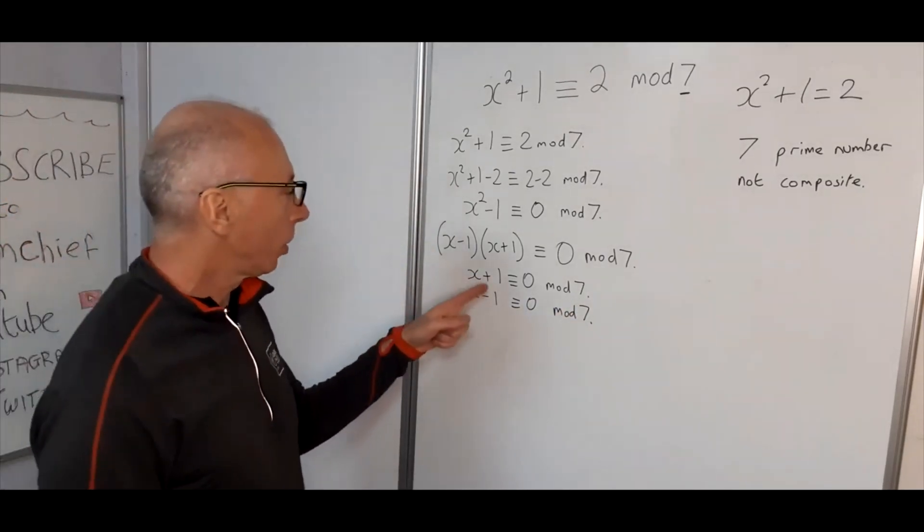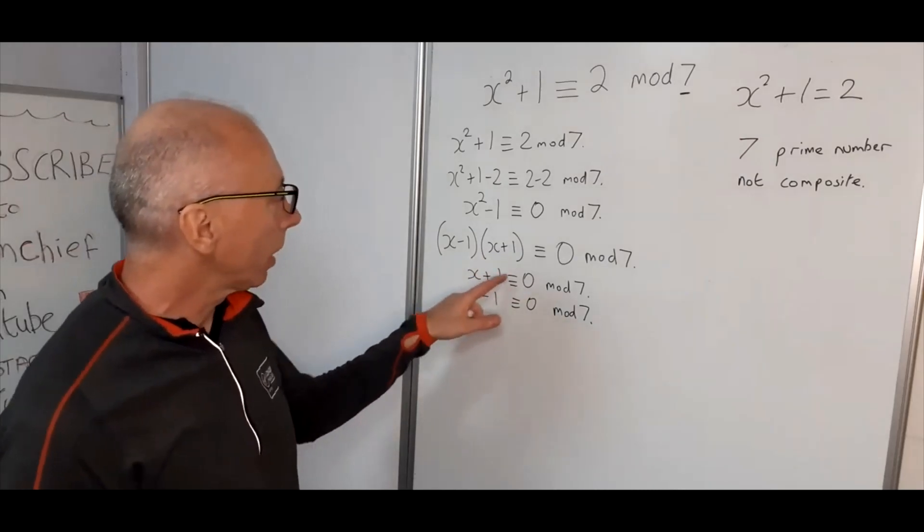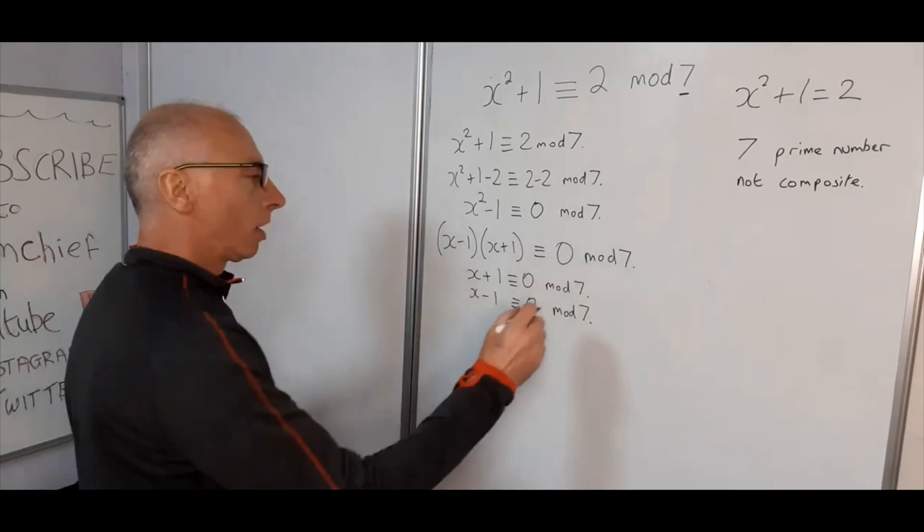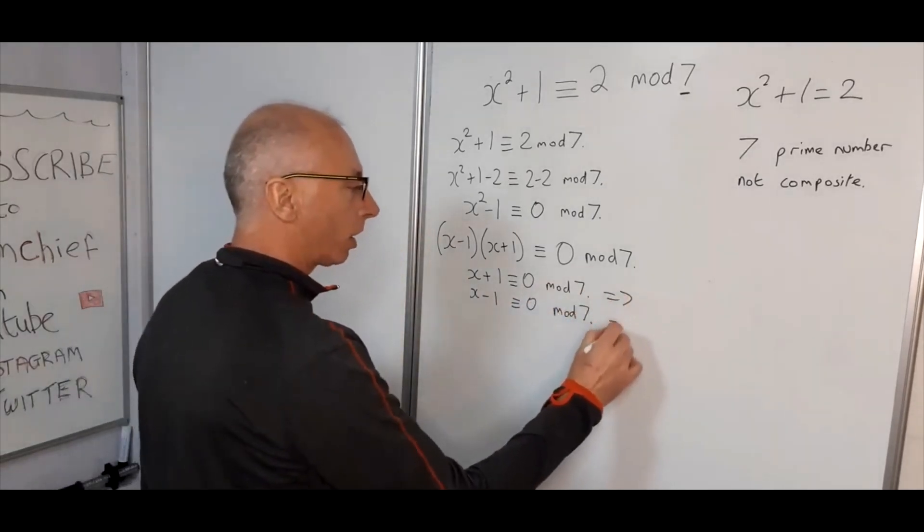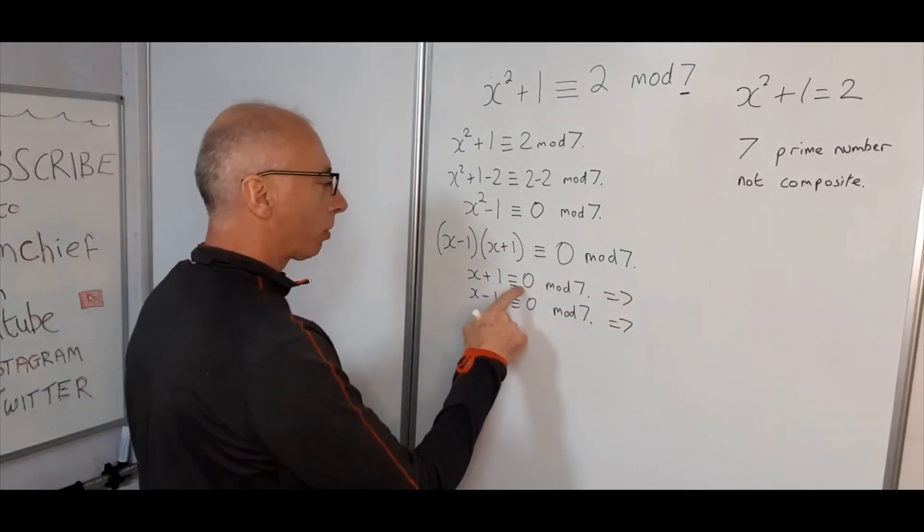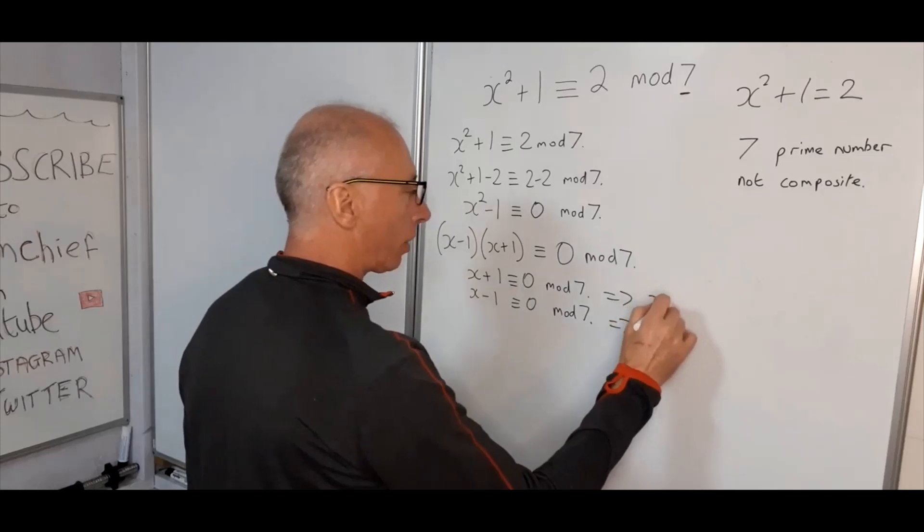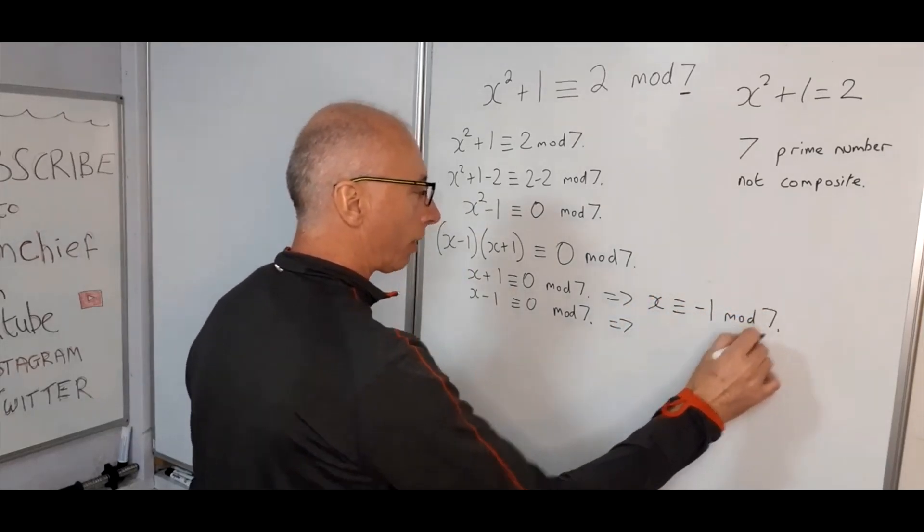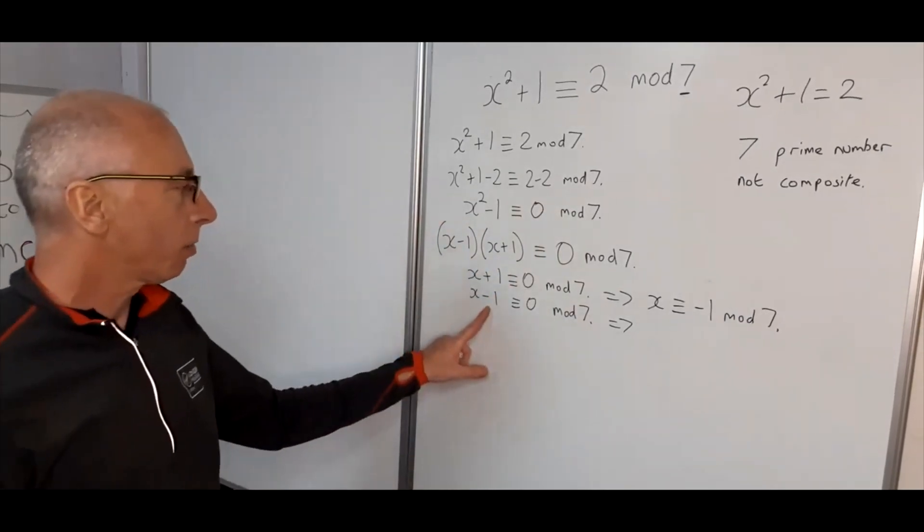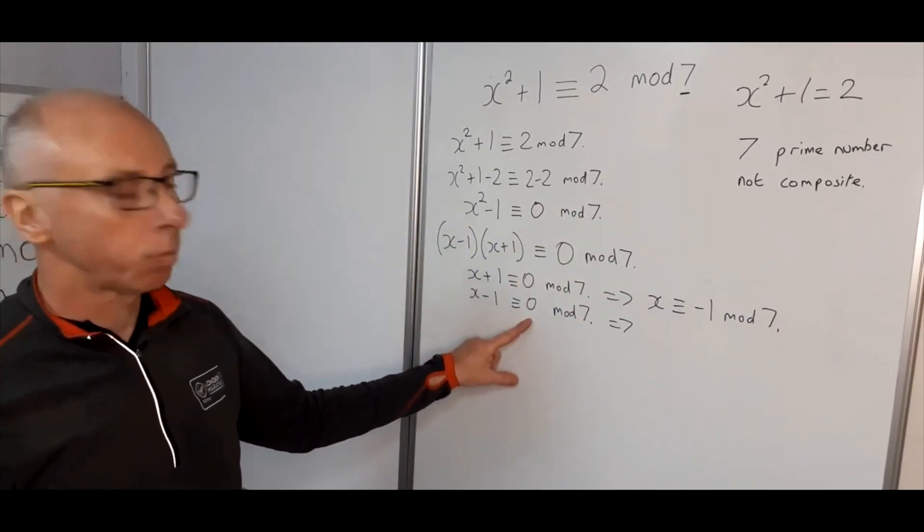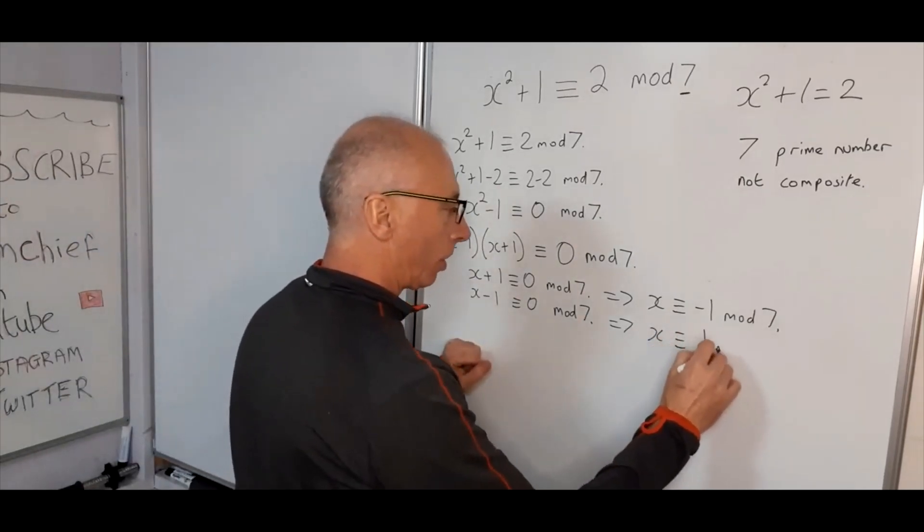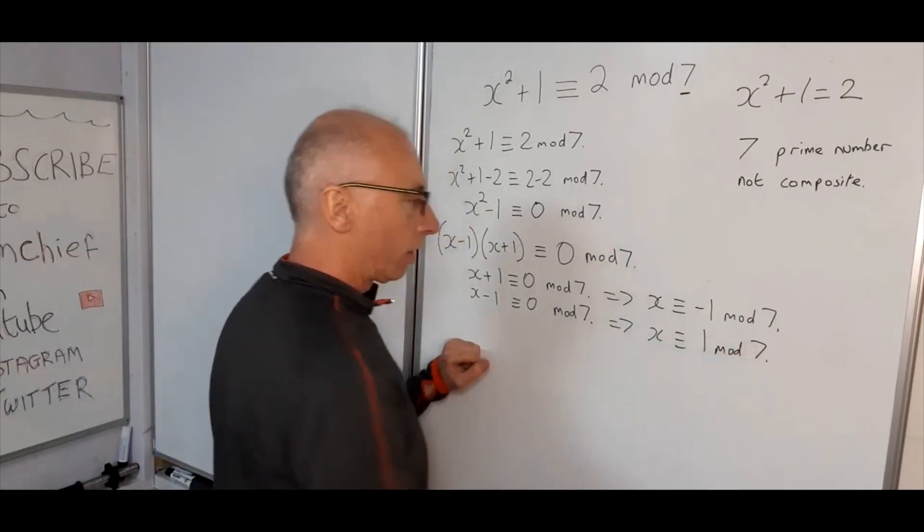Okay, so now we can bring this 1 over the other side in both instances. So x plus 1 is congruent with 0 mod 7, so that will give us x is congruent with minus 1 mod 7. That's bringing the 1 across. And this one here, bring this 1 across, we're going to add 1 to each side. So x is congruent with 1 mod 7.